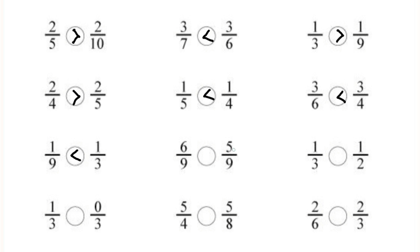In the next question, 6 by 9 and 5 by 9 — here the denominators are same. So 6 by 9 is greater than 5 by 9.